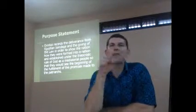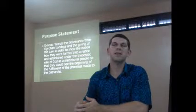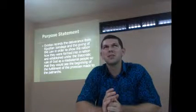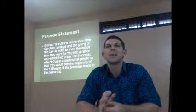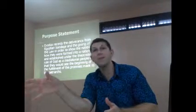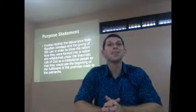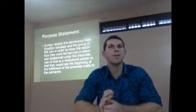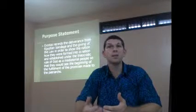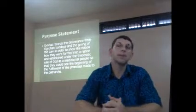Let me explain some terms. Notice the word deliverance — the book of Exodus is about God delivering his people out of Egyptian bondage. Why were they in Egypt? Joseph is the key figure. Joseph was sold as a slave by his brothers, ended up in Egypt, and through God's providential working, he ends up in a position where God uses him to preserve the life of his family. He invites them to come and stay with him in Egypt — that's how they end up there.